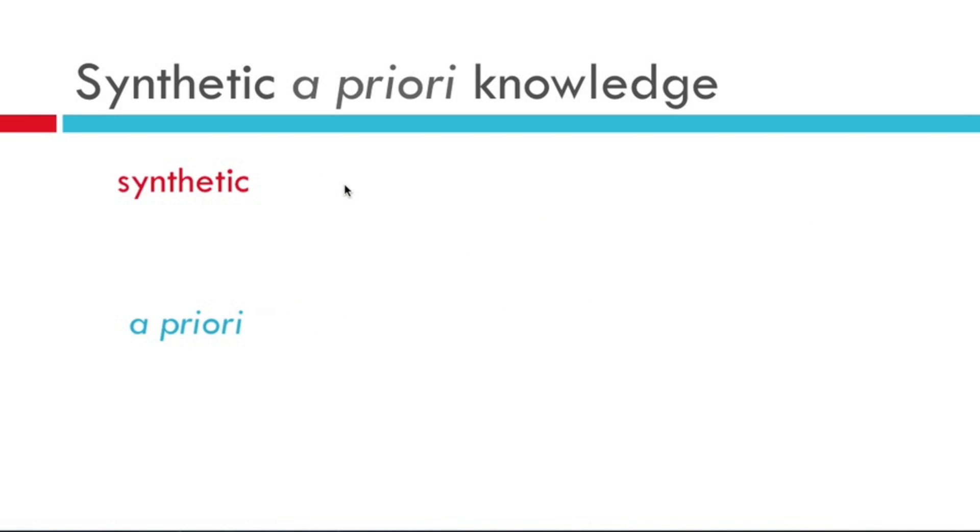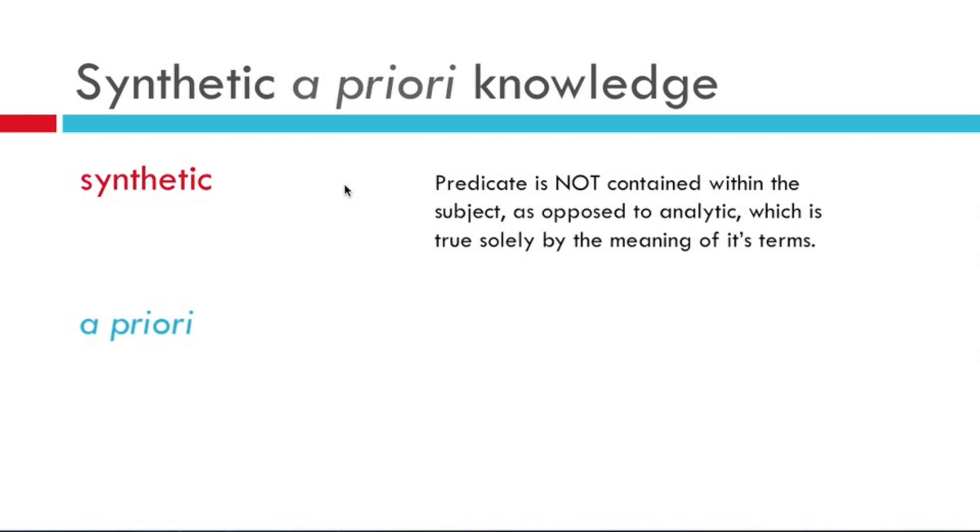Let's talk about synthetic first. Synthetic means that the predicate is not contained within the subject. If we were going to talk about synthetic knowledge, we might say all bachelors are taxpayers. How do we know that's true? Well, it's not true just by the meaning of the words. It may be the case that all bachelors pay taxes, but we can't know that strictly from the definition of the words used in that sentence.